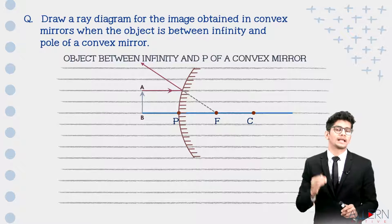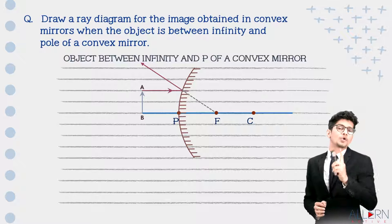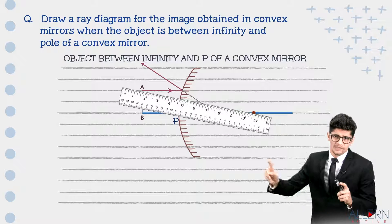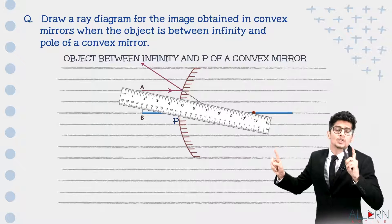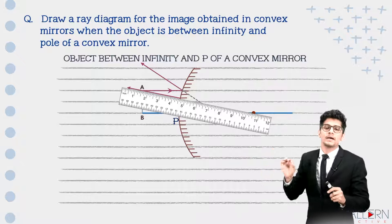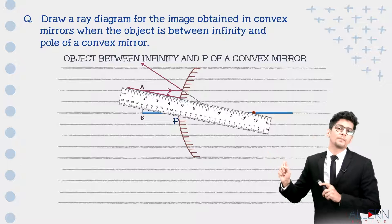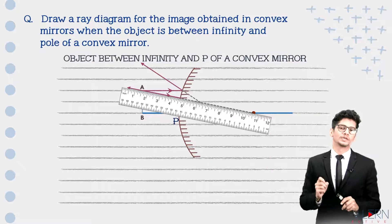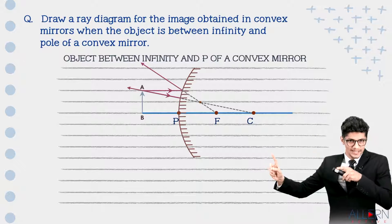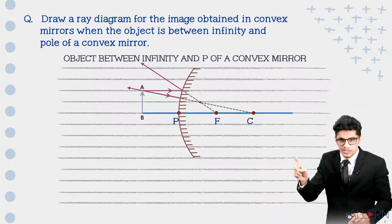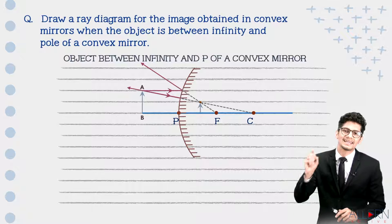Now apply the second rule carefully. Keep one end of your scale at point A and the other at C. From the mirror, draw a straight dark line moving away, with an arrow pointing toward the mirror, then draw dotted lines toward C. This ray is traveling toward the mirror in the direction of the center of curvature, so it traces the same path. The two rays appear to meet at point A', meaning the image is formed there, giving us image point A' and B'.